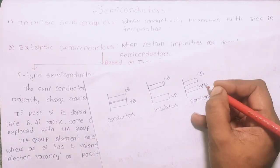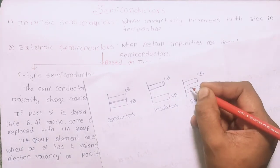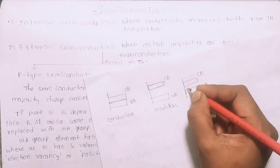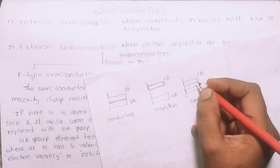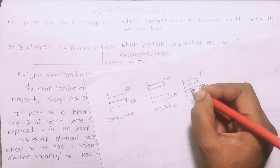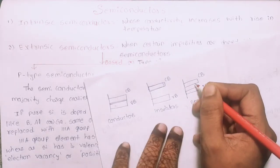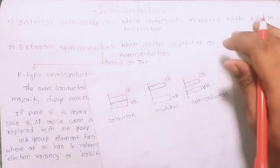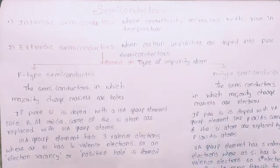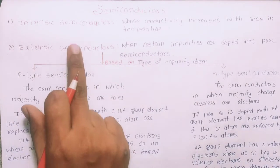For semiconductors, there is a small gap between the valence band and the conduction band. Electrons can flow, but less so than in conductors. There are two types of semiconductors.